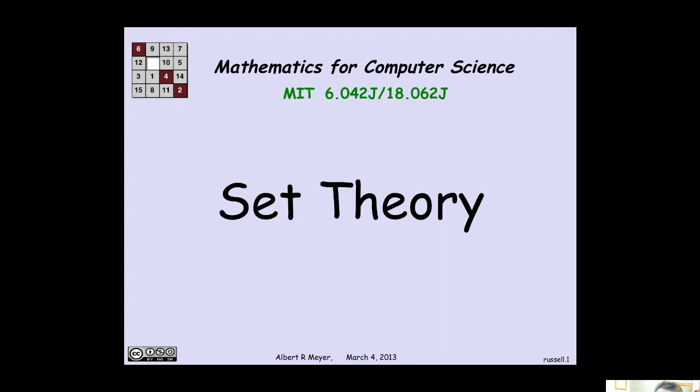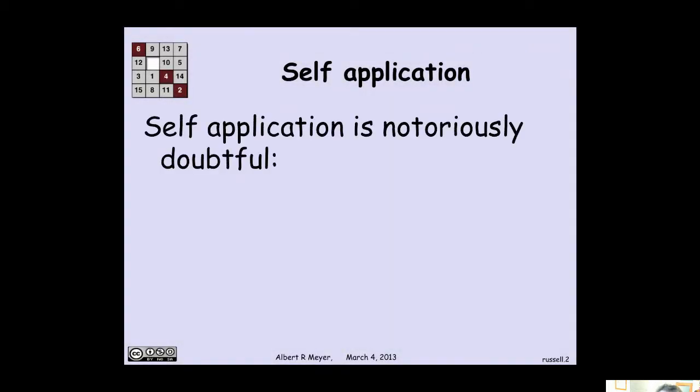In addition, we will see that the diagonal argument that we've already made much of played a crucial role in the development and understanding of set theory. So let's begin with an issue that plays an important role in set theory and in computer science, having to do with the idea of taking a function and applying it to itself, or having something refer to itself. And this is one of these things that's notoriously doubtful.